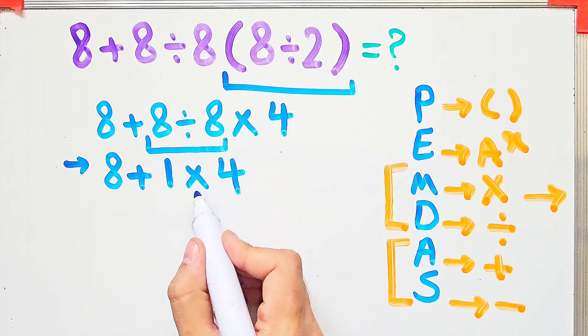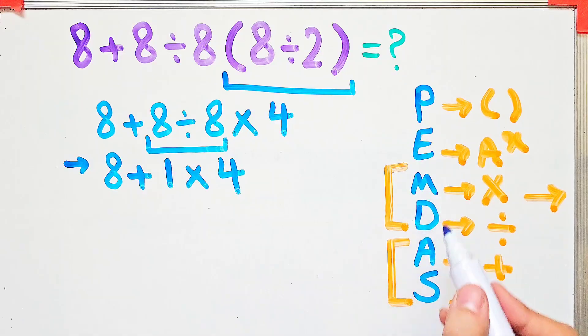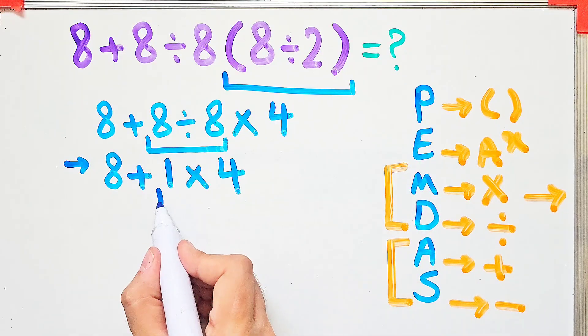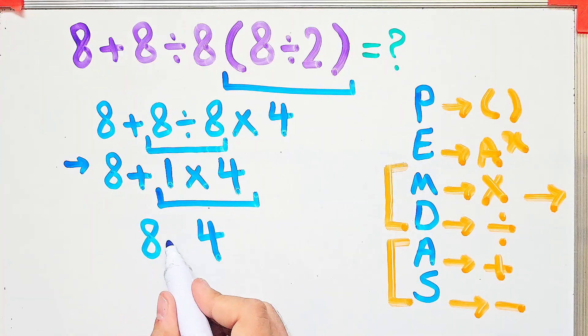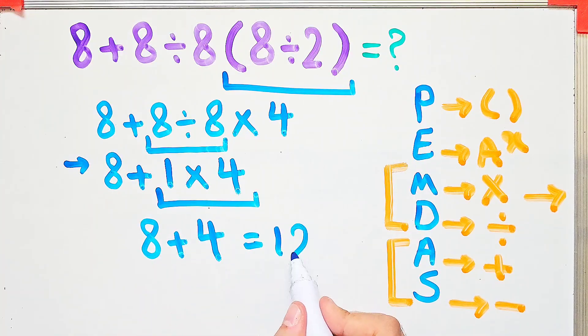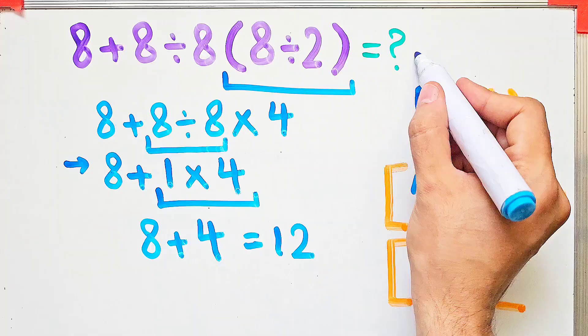In this step, we have addition and multiplication. First we do multiplication, because multiplication has higher priority than addition. We have 8 plus 4, that equals 12. The final answer of this question equals 12.